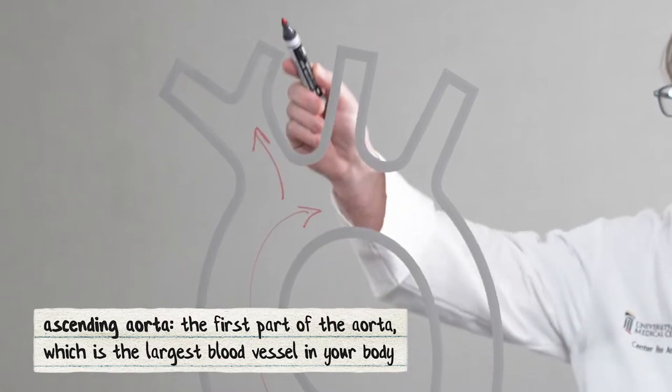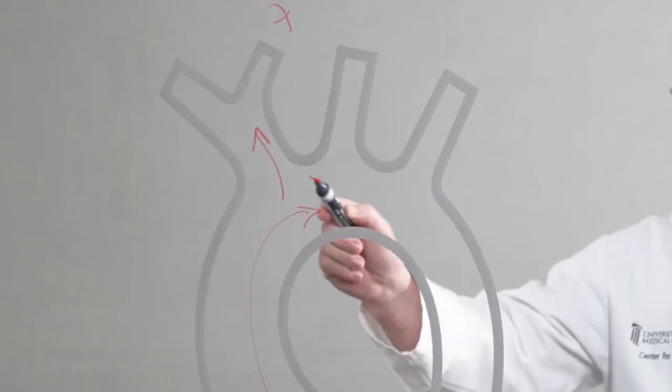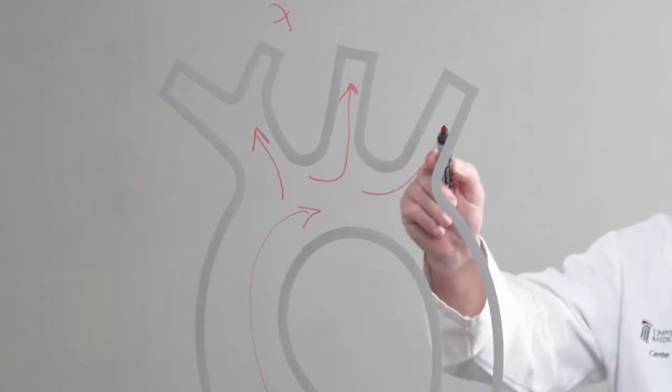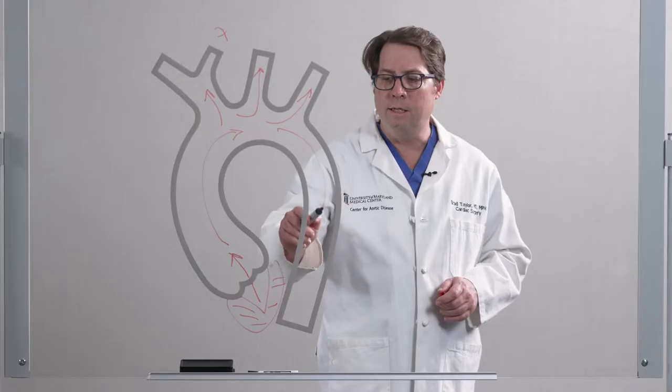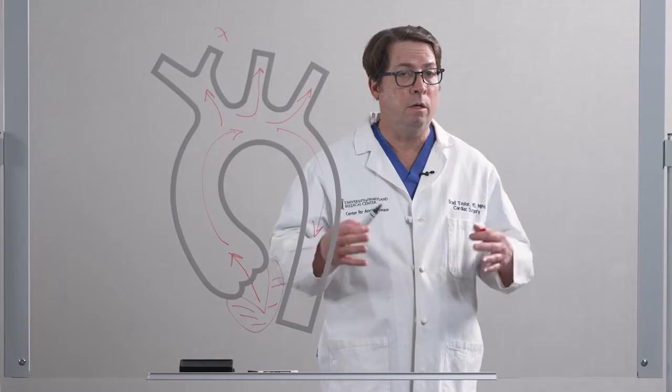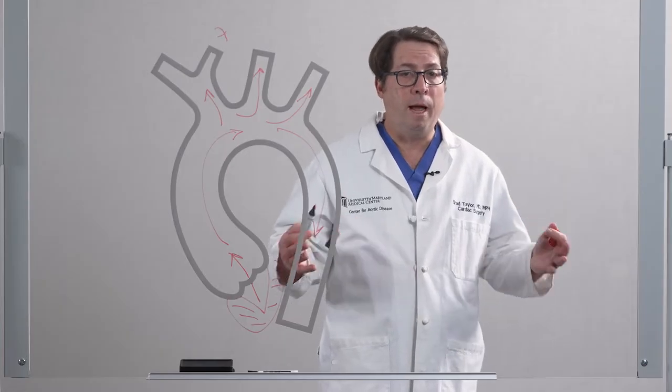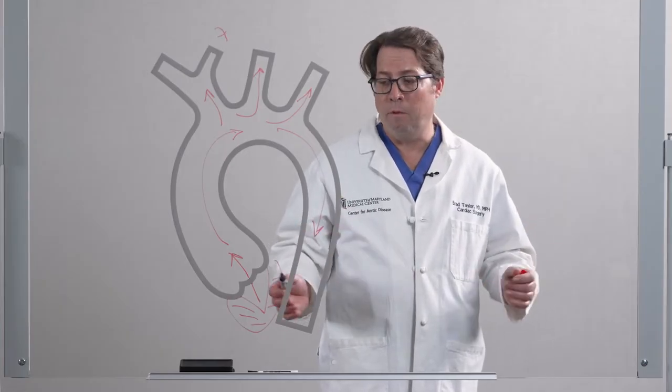It goes to your right arm and to the right side of your brain. It then goes up to the left side of your brain and to your left arm and then descends to your lower body, to your guts, to your abdomen, and to your lower legs.